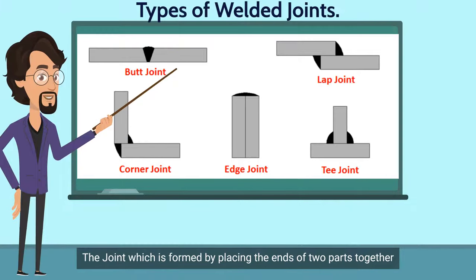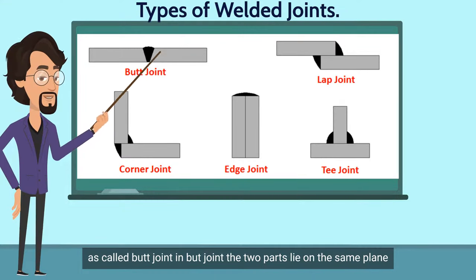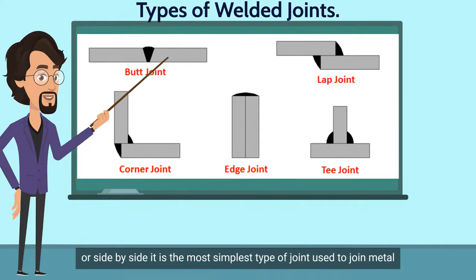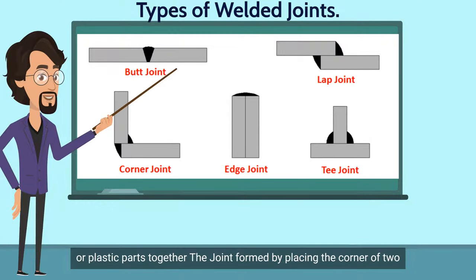The joint which is formed by placing the ends of two parts together is called a butt joint. In a butt joint, the two parts lie on the same plane or side by side. It is the most simple type of joint used to join metal or plastic parts together.